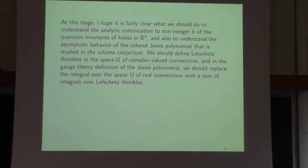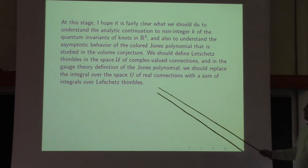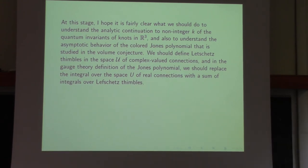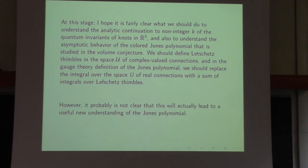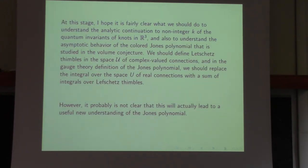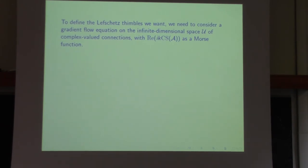To understand the analytic continuation to non-integer values of k for quantum invariants of knots in R3, and also the asymptotic behavior of the colored Jones polynomial as in the volume conjecture, we should replace the space U of real connections with the space of complex connections, define Lefschetz thimbles in the space of complex connections, and replace the usual integral in gauge theory with a sum of integrals over Lefschetz thimbles.